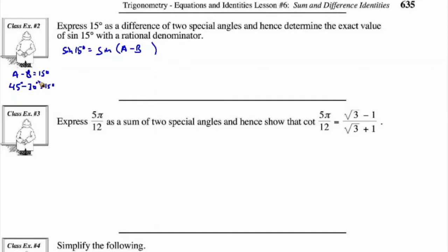You can also choose two different angles whose difference is 15 degrees — for example, 60 and 45. But let's continue with 45 minus 30: sine of 15 will be sine of 45 degrees minus 30 degrees.